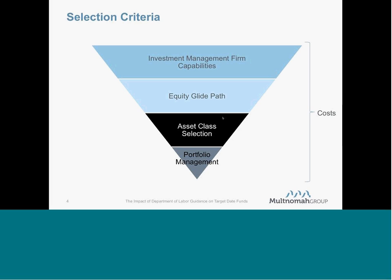As a result, the decision about how to select a target date fund becomes increasingly important. We look at the selection criteria as a four-tiered process. The first tier: investment management firm capabilities. The second: does the equity glide path meet the needs of the participant population? The third: do we utilize asset classes and investment products that are reasonable and appropriate for our participant population? And last: how effectively does the portfolio manager put together an investment structure that works for participants? Overlaid throughout is the impact of costs on participant performance.